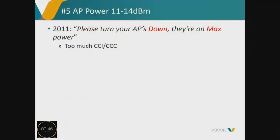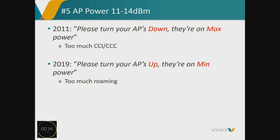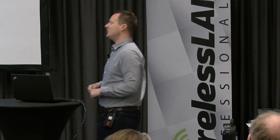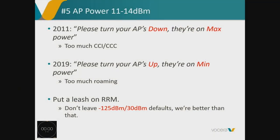On AP power: when I started with Cisco in 2011, I told everyone to turn APs down because they were on max power and we had too much co-channel interference. Now I'm going around telling everyone to turn APs up, because we're going so dense that APs are dropping to power level 6 or 7 — tiny cells with little CCI, but my device is hopping every three meters and every hop eats into my jitter buffer. You need to balance keeping spectrum clean while not penalizing mobile clients that are constantly roaming. Put a leash on RM — do a proper survey at a set power level and implement that when you deploy.